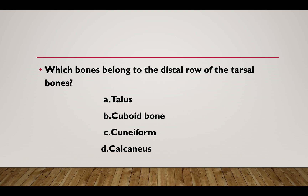Which bones belong to the distal row of the tarsal bones? Option A: Talus. Option B: Cuboid bone. Option C: Cuneiform. Option D: Calcaneus. Answer: Option B — Cuboid bone.